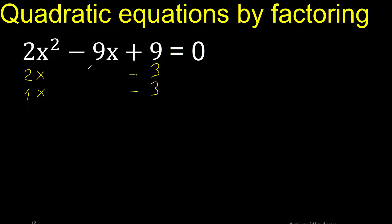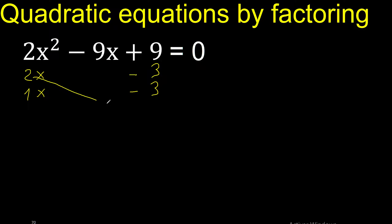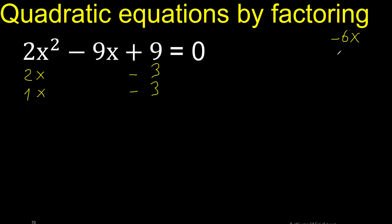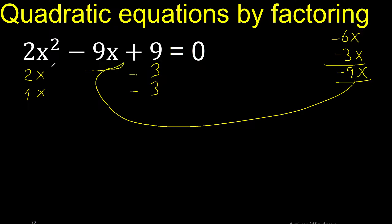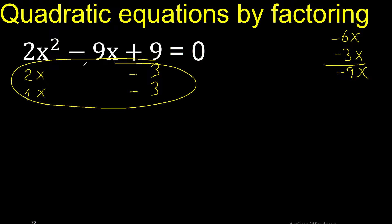Let's analyze if it is correct. 2 multiplied by minus 3 is minus 6. x. 1 multiplied by minus 3 is minus 3. x. Minus 6 minus 3 is minus 9. Equal — therefore it is correct.